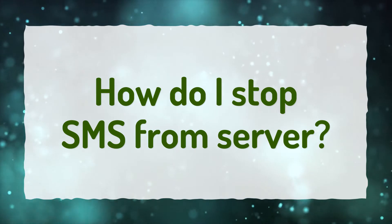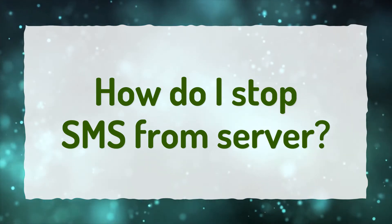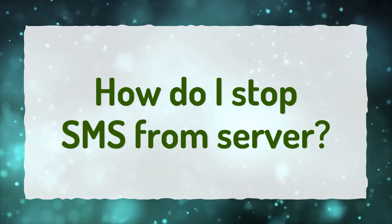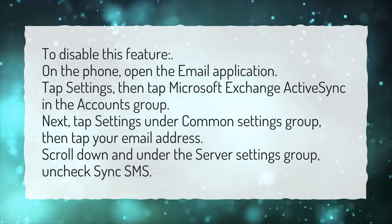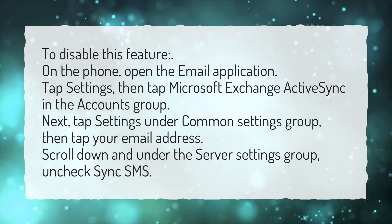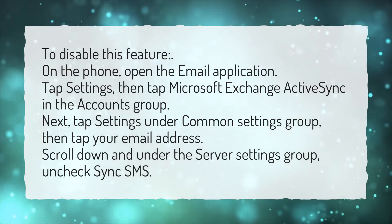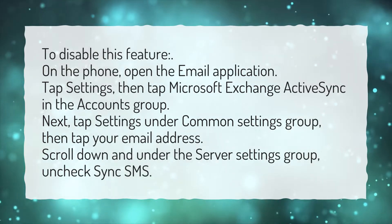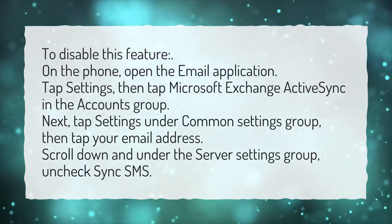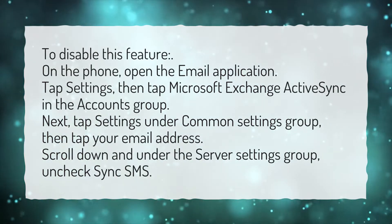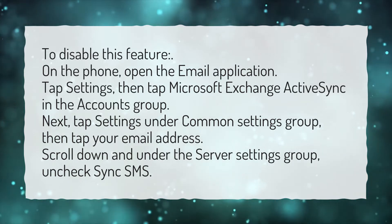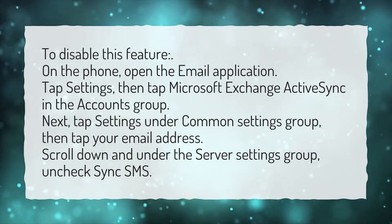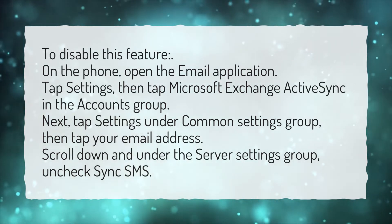How do I stop SMS from server? To disable this feature, on the phone, open the email application. Tap Settings, then tap Microsoft Exchange ActiveSync in the Accounts group.